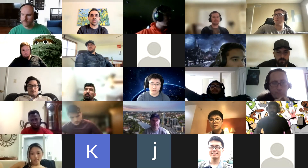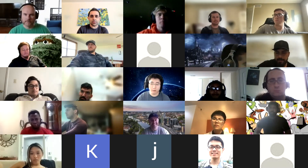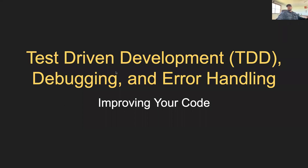So let's talk about testing — specifically test-driven development. To recap: testing is a development process where you write test cases that validate your code is working correctly and meets requirements. Debugging is a developer process where we manually find and fix errors. Error handling is a development process where we write safer code using things like try/except and checking for bad inputs, as we did in our factorial example. All three combined make you a better developer.